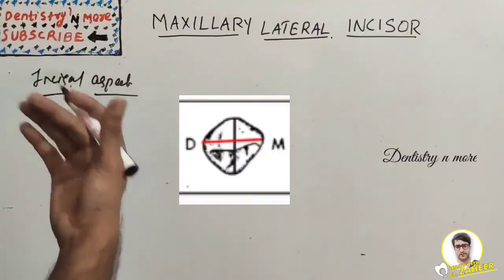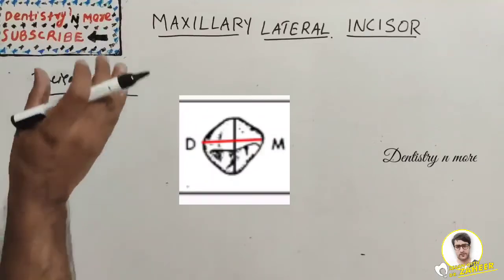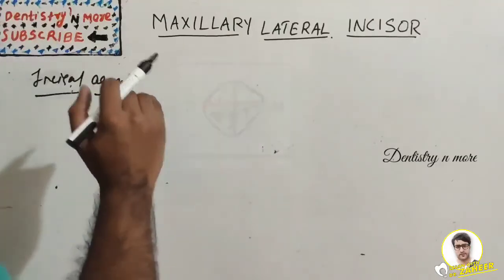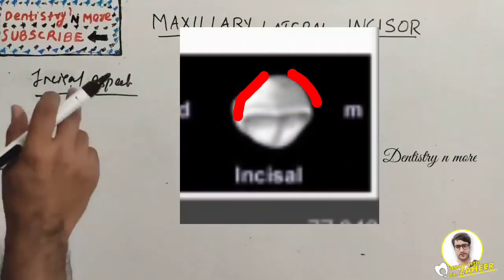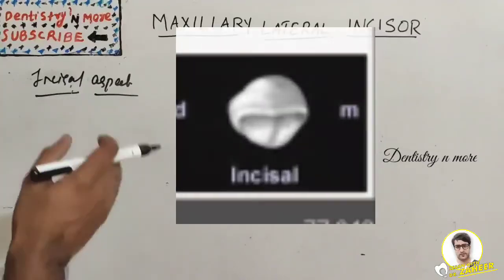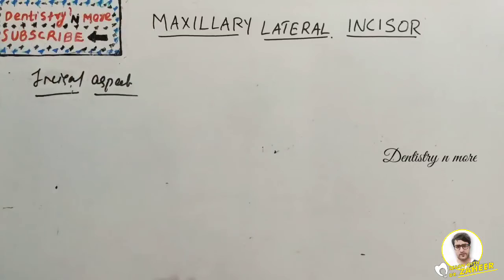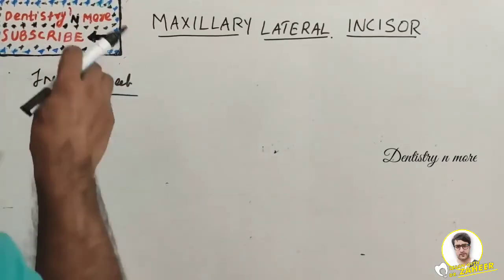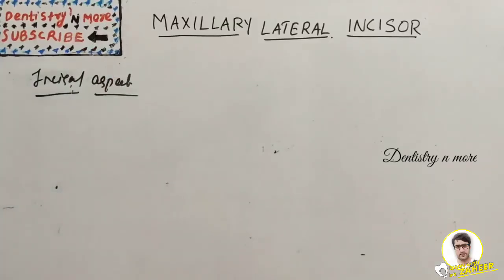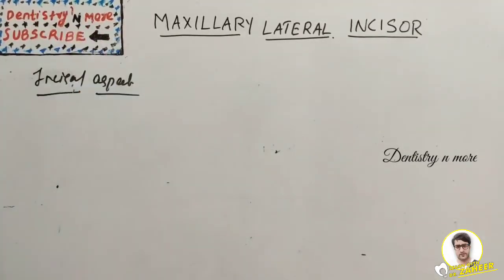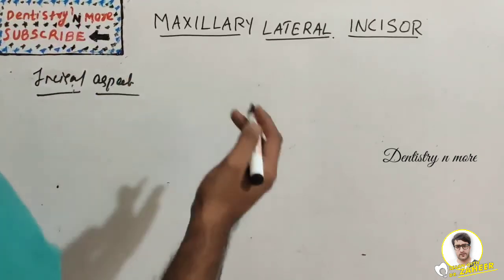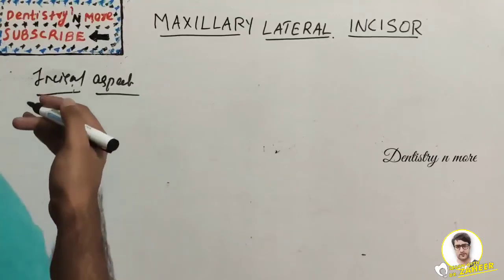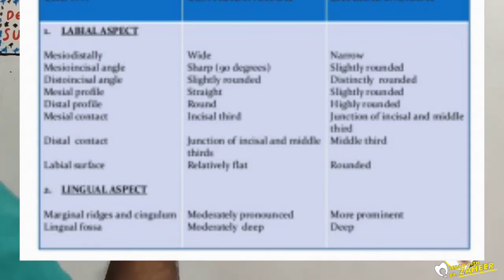The labiолingual dimension may be greater than usual in comparison with the mesiodistal dimension. The incisal aspect exhibits more convexity labially and lingually than the maxillary central incisor. The mesiolabial and distolabial line angles are much more rounded. The lobes of the labial surface are less clearly demarcated in the lateral incisor because of the high degree of convexity of the labial surface. Sometimes a question may ask you to compare the maxillary central incisor and lateral incisor. On the labial aspect, the mesio-incisal and disto-incisal angles are sharp in the central incisor but slightly rounded and distinctly rounded in the lateral. The mesial profile is straight in central but slightly rounded in lateral; the distal profile is round in central and highly rounded in lateral.